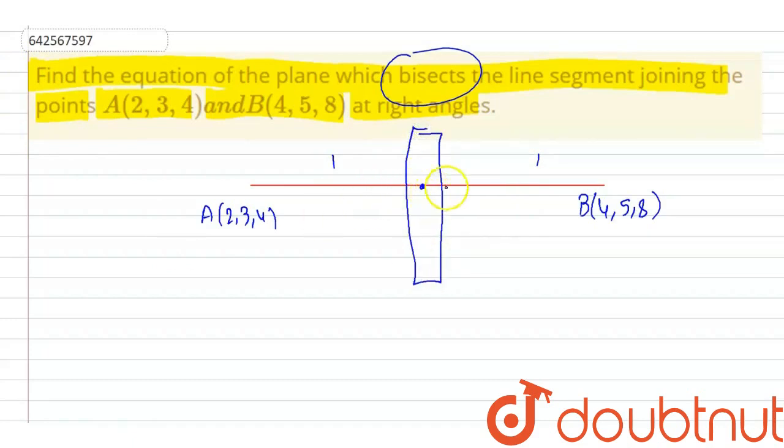Now to find the points of the plane, we will find the midpoint of this line AB. The midpoint will be (3, 4, 6) as 2 plus 4 upon 2, 5 plus 3 upon 2, and 4 plus 8 upon 2.